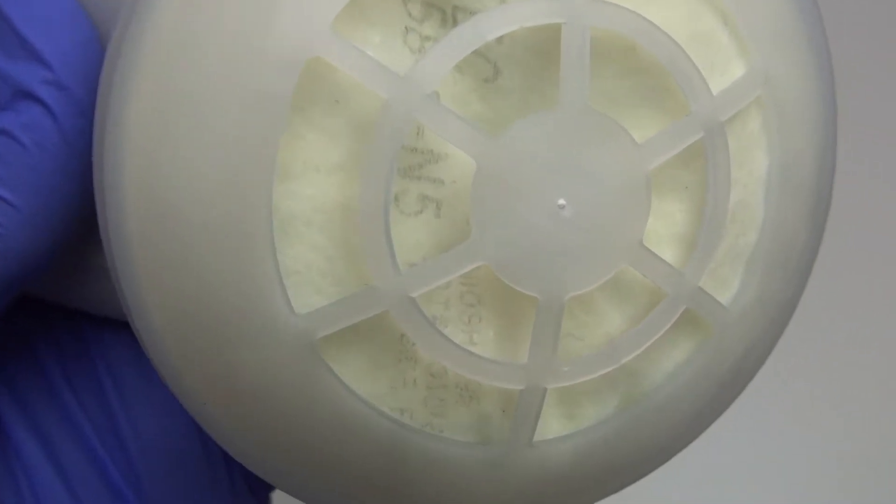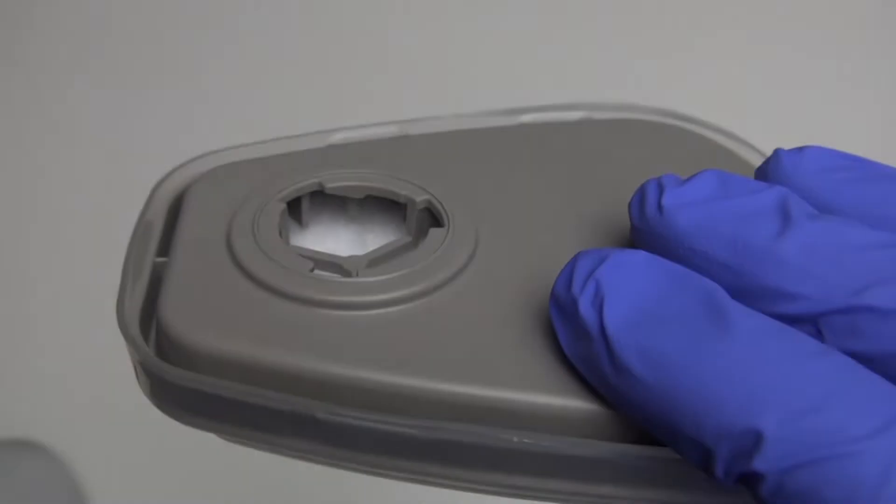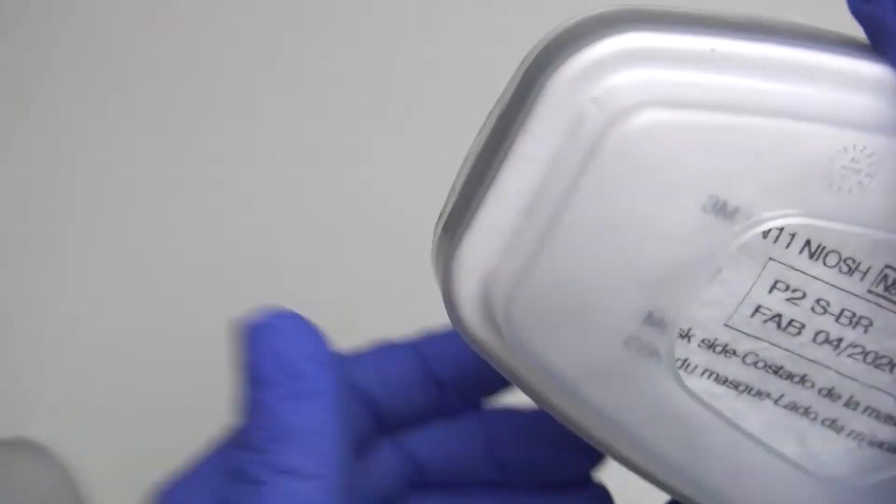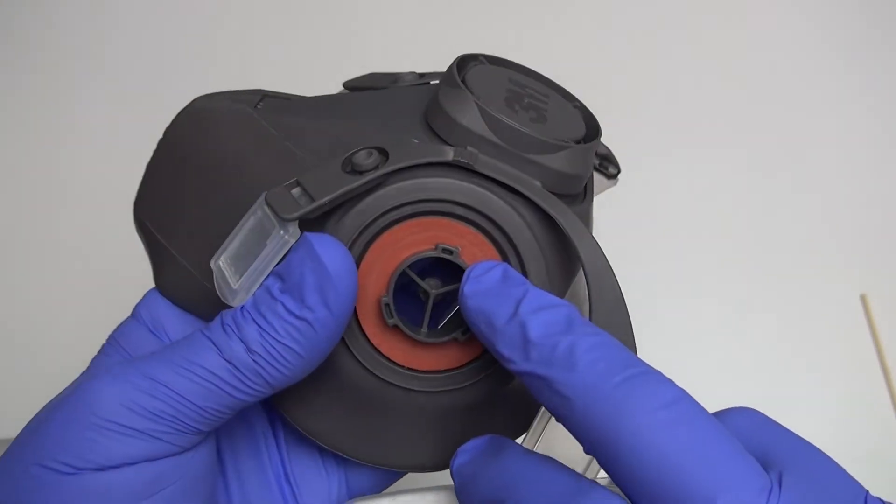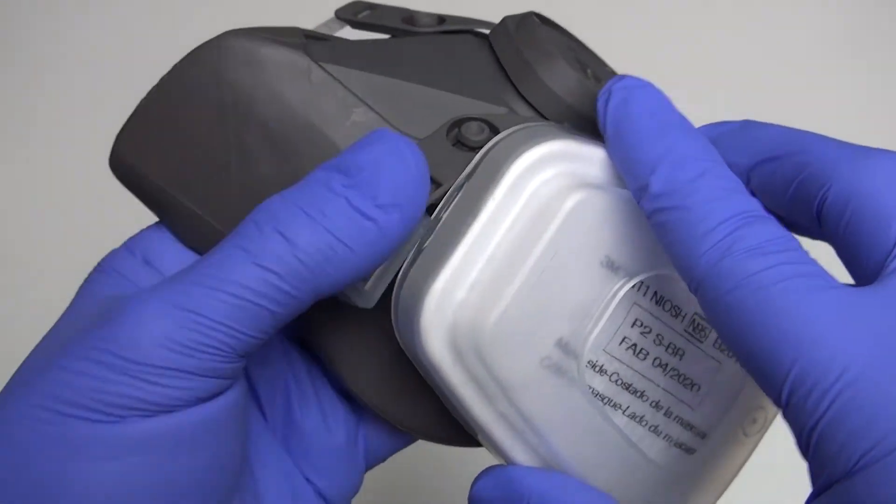Let's compare that to the 3M. I'm going to grab the 3M cartridge here. So this has the detent and you'll see what a difference that makes on the mask. There's the small lug that's the key to make sure it lines up in the correct orientation.